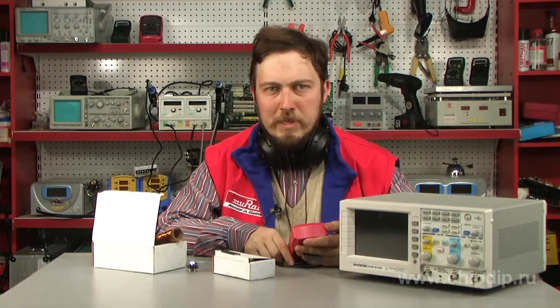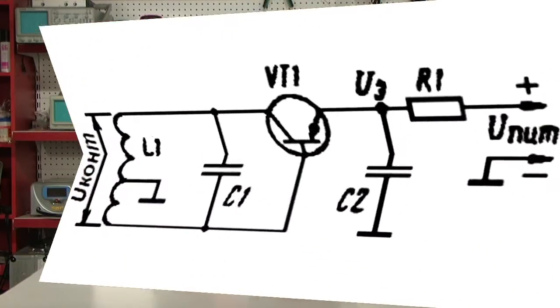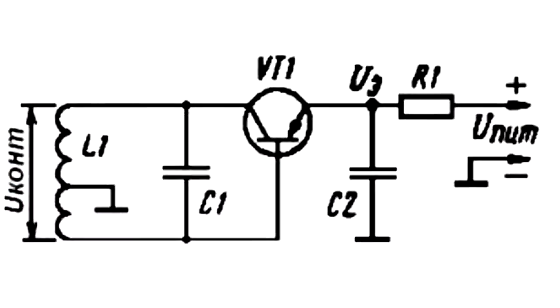There is one necessary condition for the device to work properly: the feed voltage must be considerably higher than 1.2 V. Then you will be able to adjust the transistor current by choosing the resistor R1.